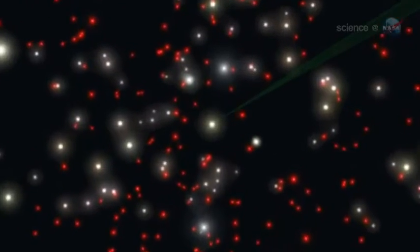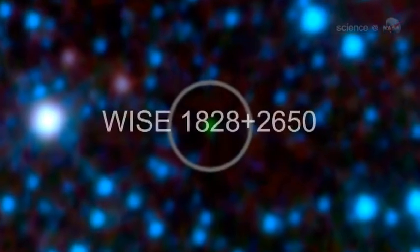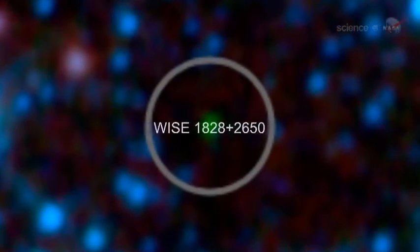WISE recently found six incredibly cool stars less than 40 light years from Earth. One of these Y-dwarfs, WISE 1828 plus 2650, is the record holder for stellar cool with an estimated atmospheric temperature less than 80 degrees Fahrenheit, or 25 degrees Celsius. WISE 1828 plus 2650 is a room temperature star. Other Y-dwarfs were about the same temperature as a human body.